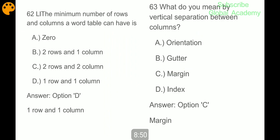The direction of rectangular page for viewing and printing is called orientation. The minimum number of rows and columns a Word table can have is one row and one column.